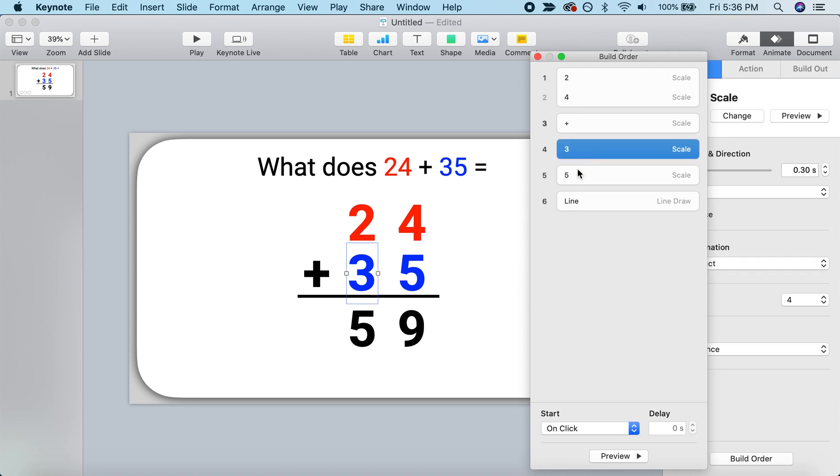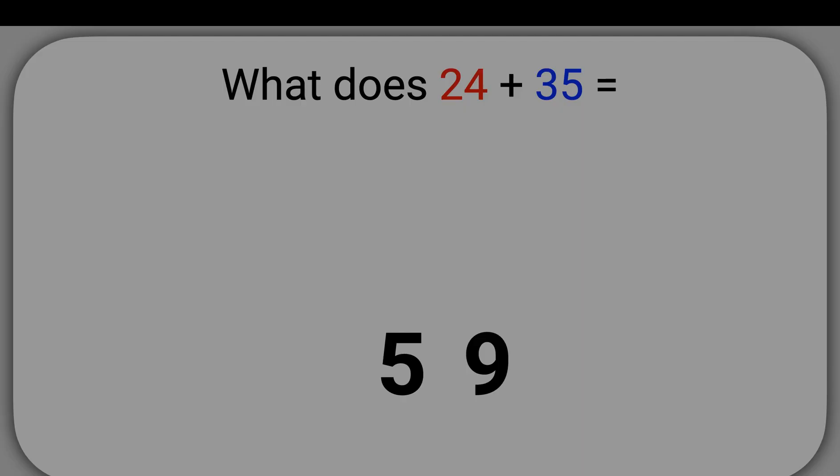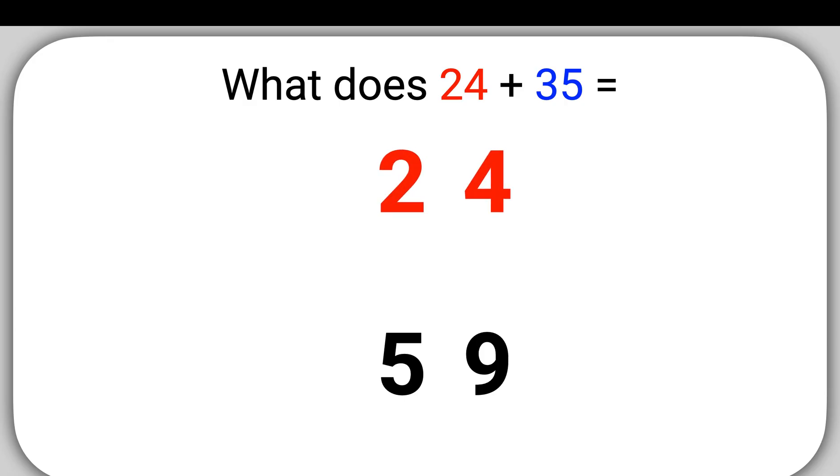I'm going to do the same thing with 35. So instead of a 3 and then a 5, let's take the 5 and connect it with that previous animation so that 24 and 35 are connected. Let's see what that looks like now. So now we draw out our 24, our plus symbol, our 35, and we draw our line. Nice.